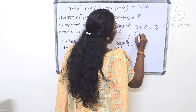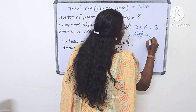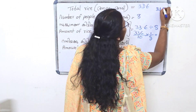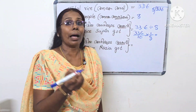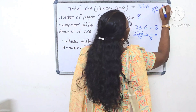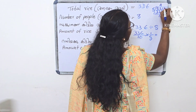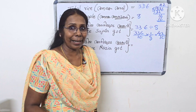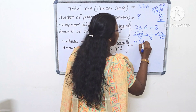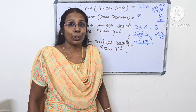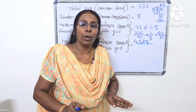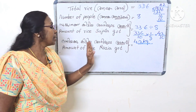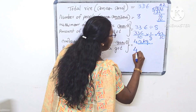33.6 kilograms of rice divided equally among eight people. 4, 32, 14, 8, 2, 14 — we find 4.2. The amount of rice each person gets is 4.2 kg.